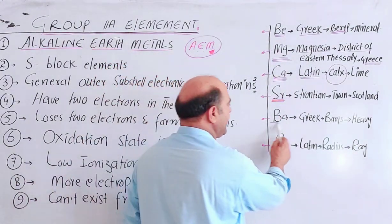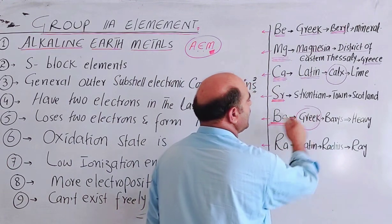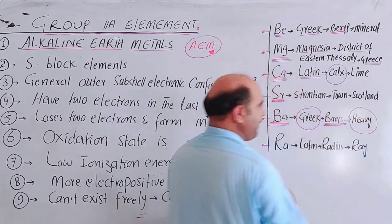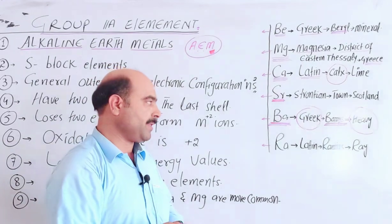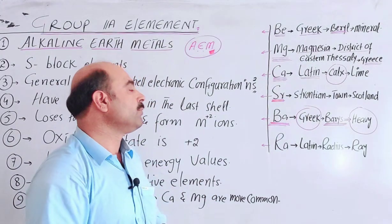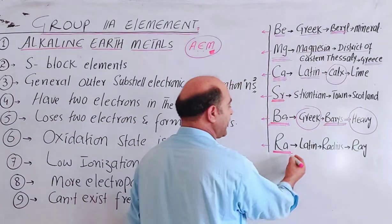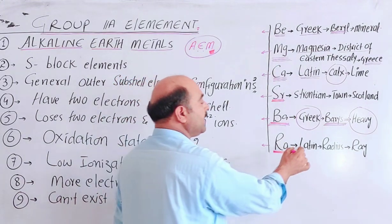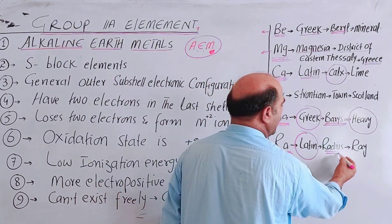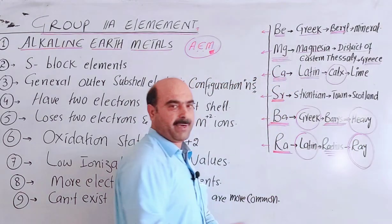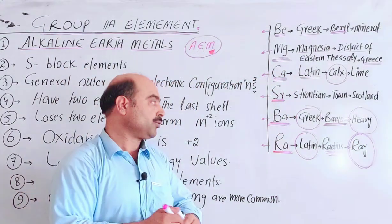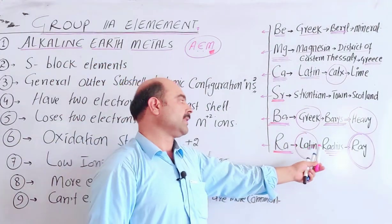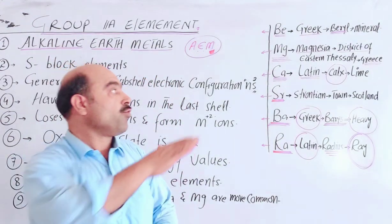Next is barium, symbol Ba. Barium is derived from the Greek word baris, which means heavy. The last one is radium, symbol Ra. Radium is derived from the Latin word radius, which means ray. This is the word origin of these elements.